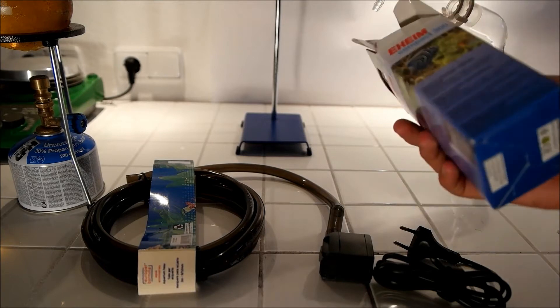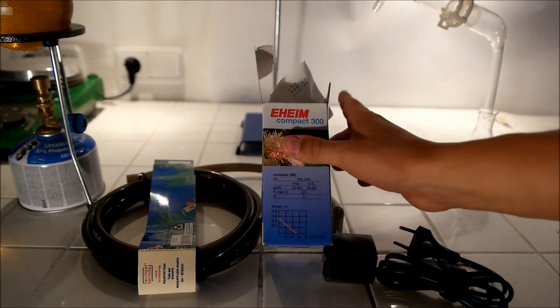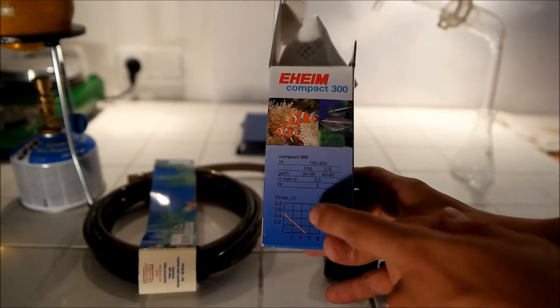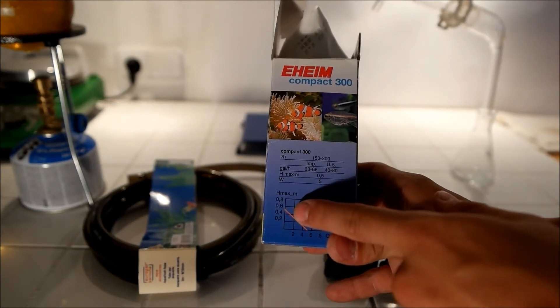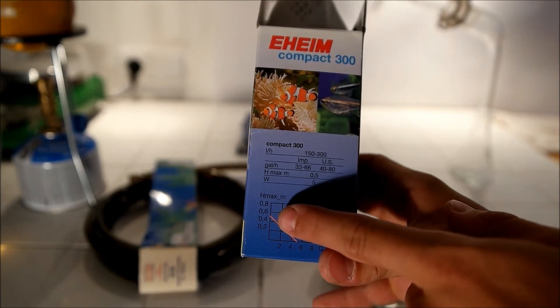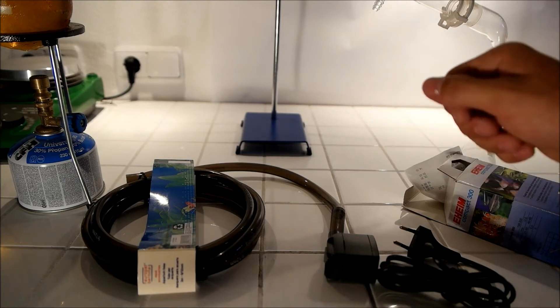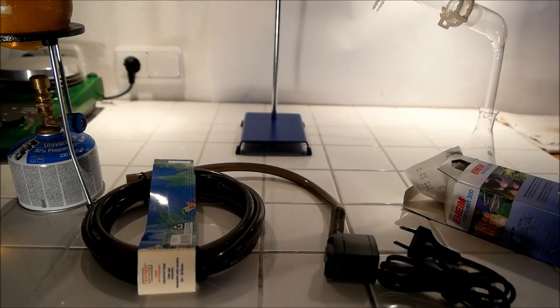You have to pay attention to what's written on the pump because here, for example, the maximum height at which it can pump water up is only 0.5 meters, so 50 centimeters, and of course the distillery can't be higher because then you won't get your water up there.